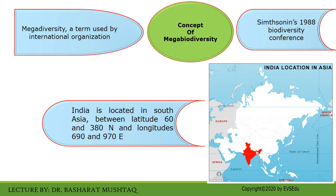As far as the location of India is concerned, India is located in South Asia between the latitudes of 6° and 38° north and longitudes 68° to 97° east, as depicted in this picture.